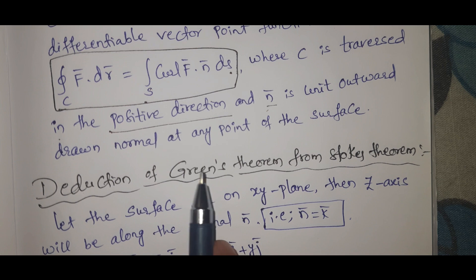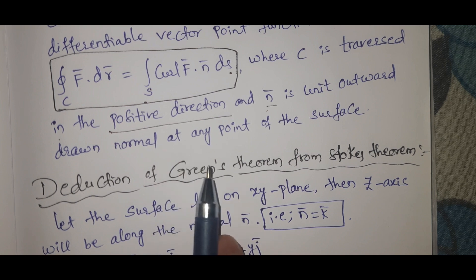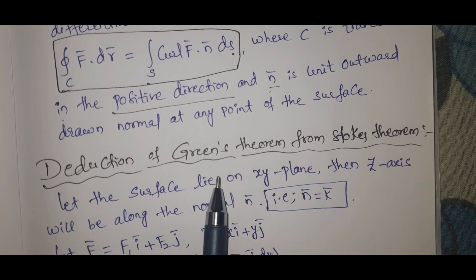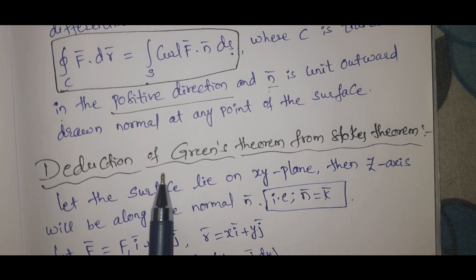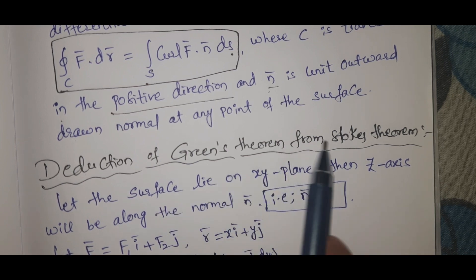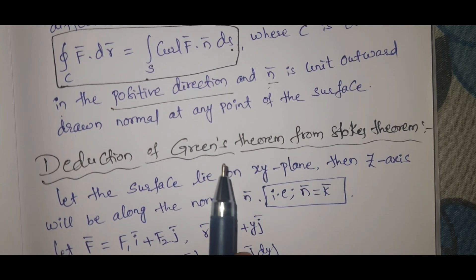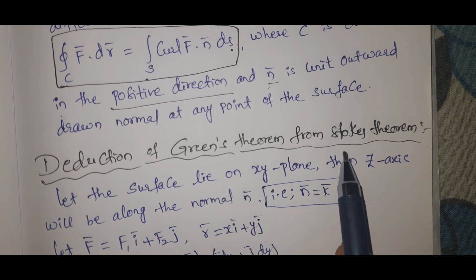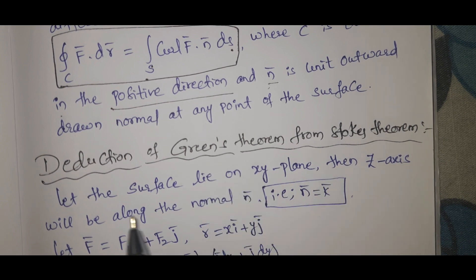We can see the deduction of Green's theorem from Stokes theorem. Green's theorem from Stokes theorem - there are various options added and chances.